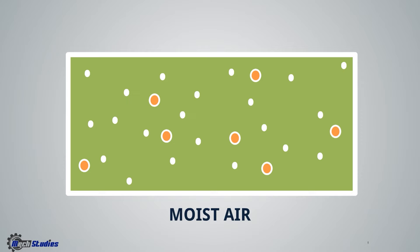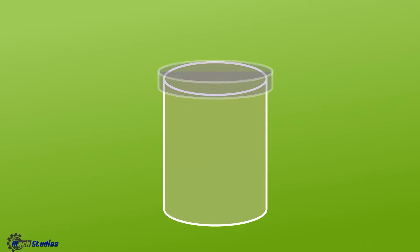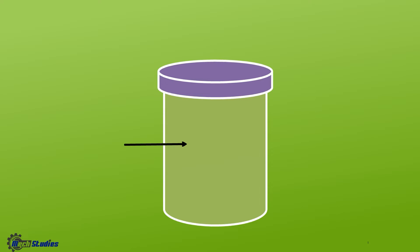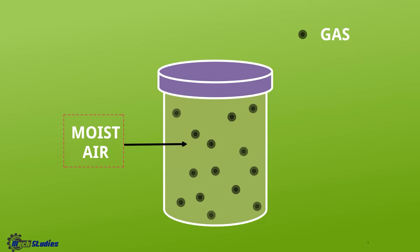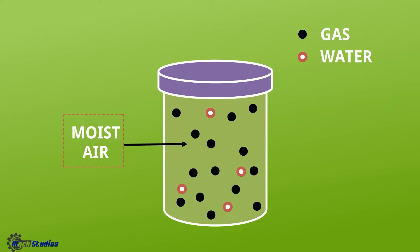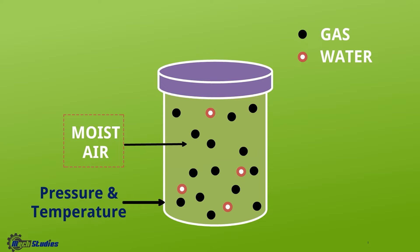Saturation and unsaturation are closely related to water vapor. Consider an enclosed container that has moist air — it means this container has gases and water vapor. This container is maintained at some fixed pressure and temperature, because if we change the pressure and temperature, the properties of air will change.